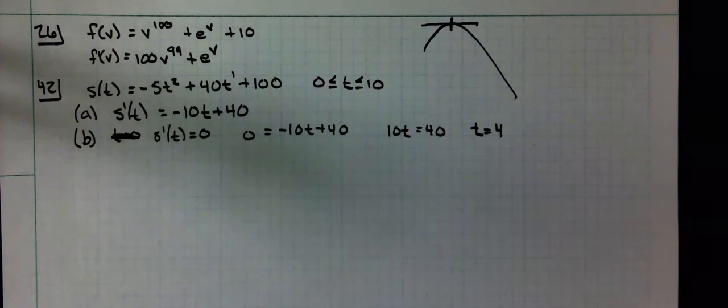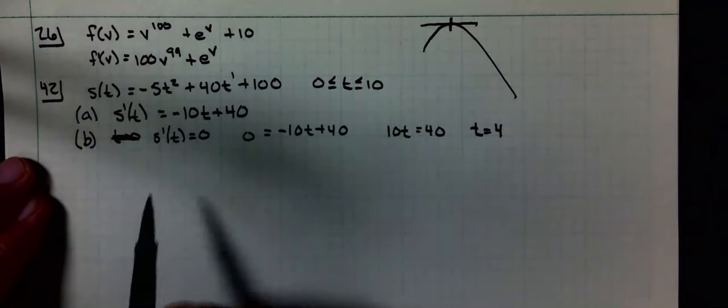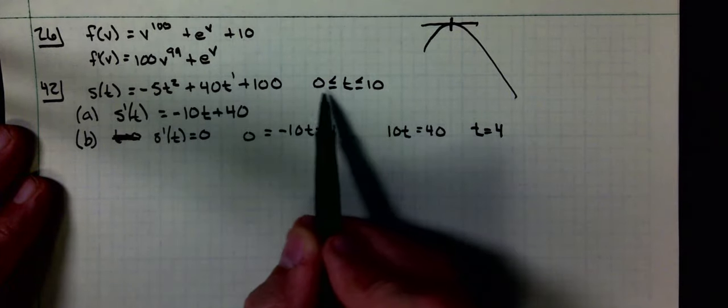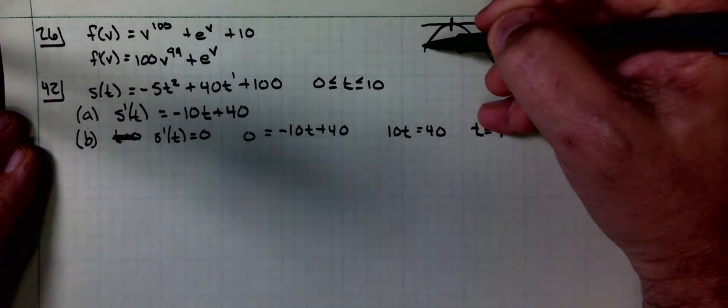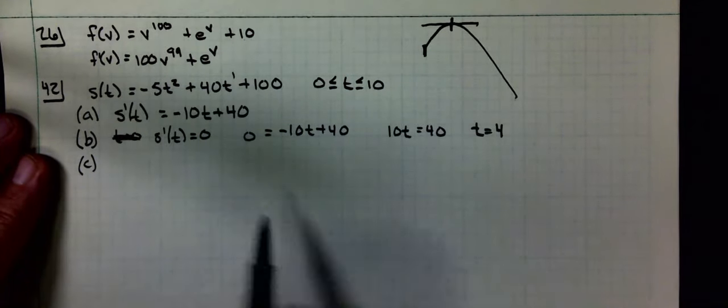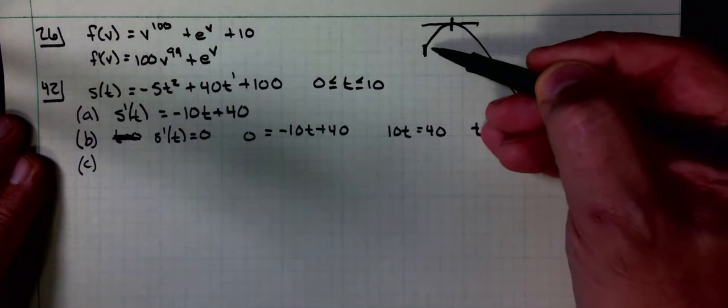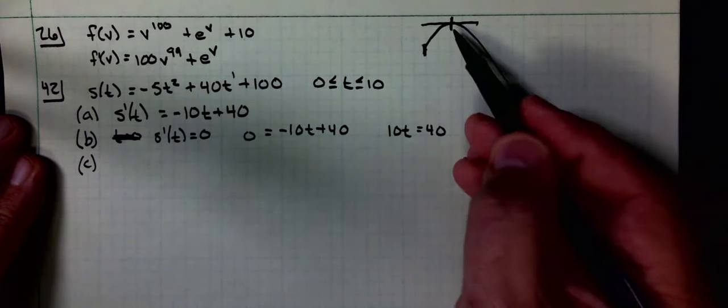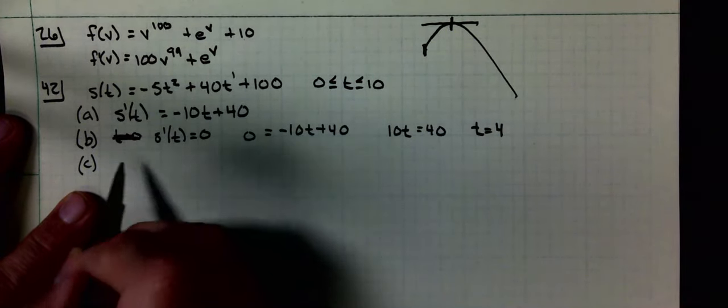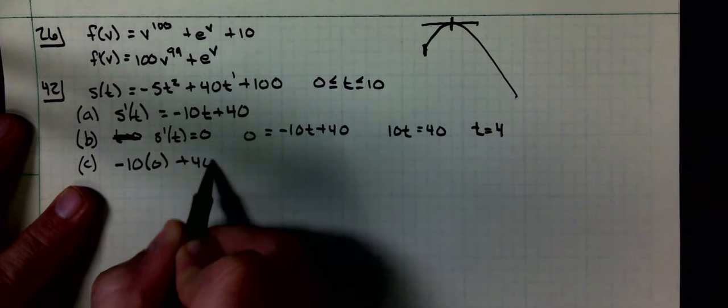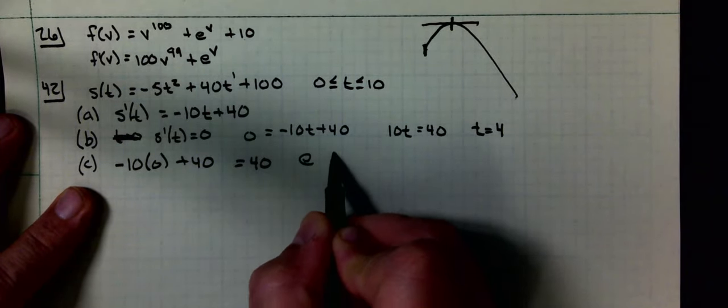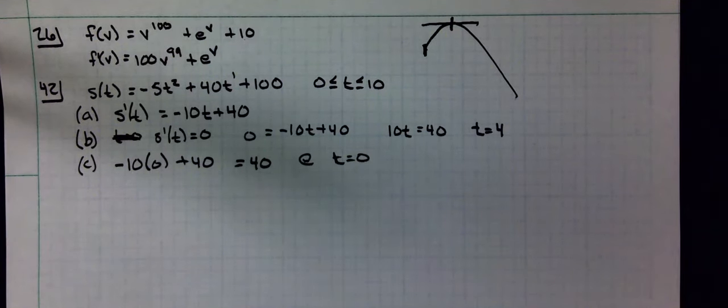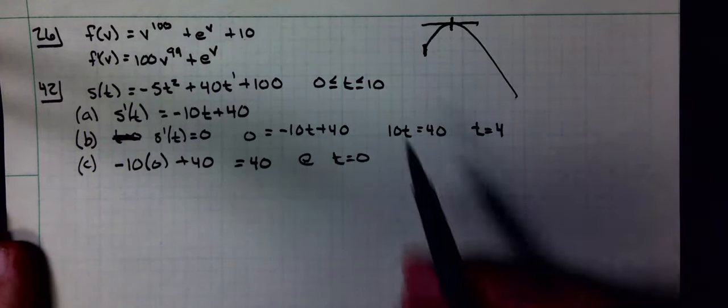At what time does the instantaneous velocity have the greatest magnitude? When is it the steepest? I think it's going to be right here at launch. Greatest magnitude has got to be between zero and four. When I put a 4 in, I have zero slope, so if I put a 0 in: negative 10 times 0 plus 40 is 40 at time zero.